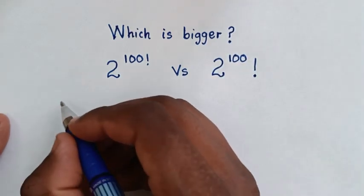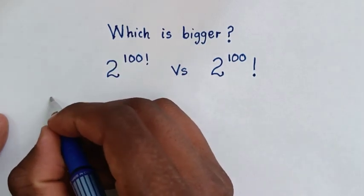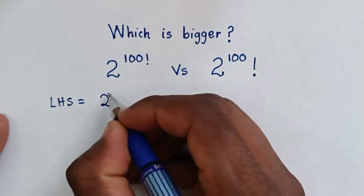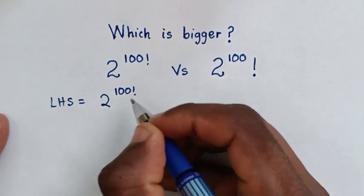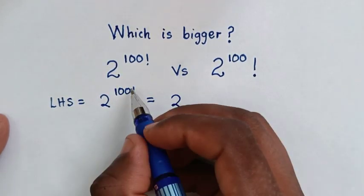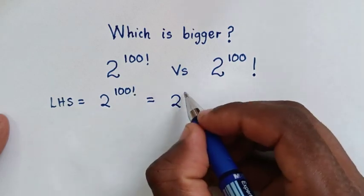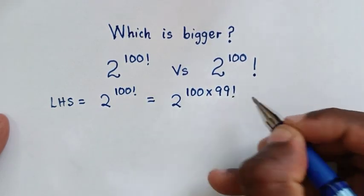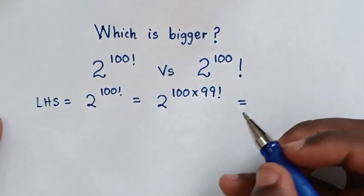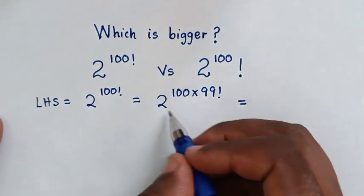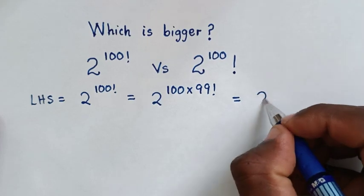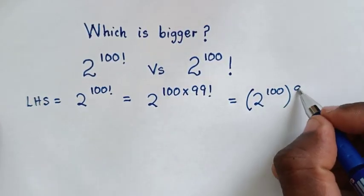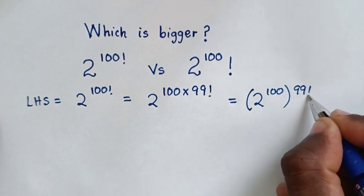From the left-hand side, the number 2 to the power of 100 factorial is equal to 2 to the power of 100 factorial, which is the same as 100 times 99 factorial. Taking 2 to the power of 100 inside the bracket, it becomes 2 to the power of 100, inside the bracket, then 99 factorial outside the bracket.